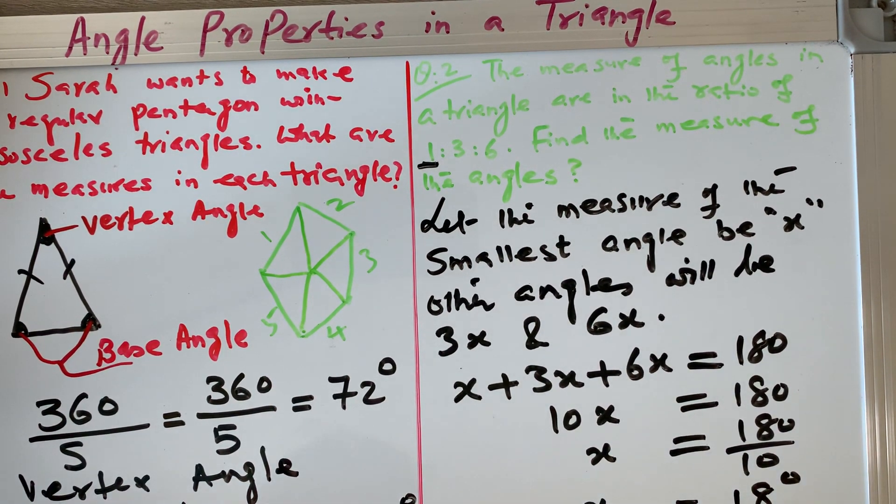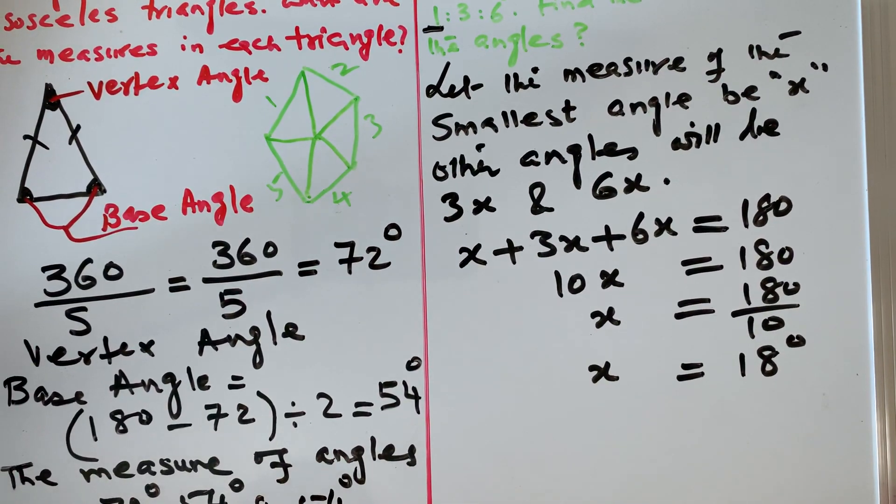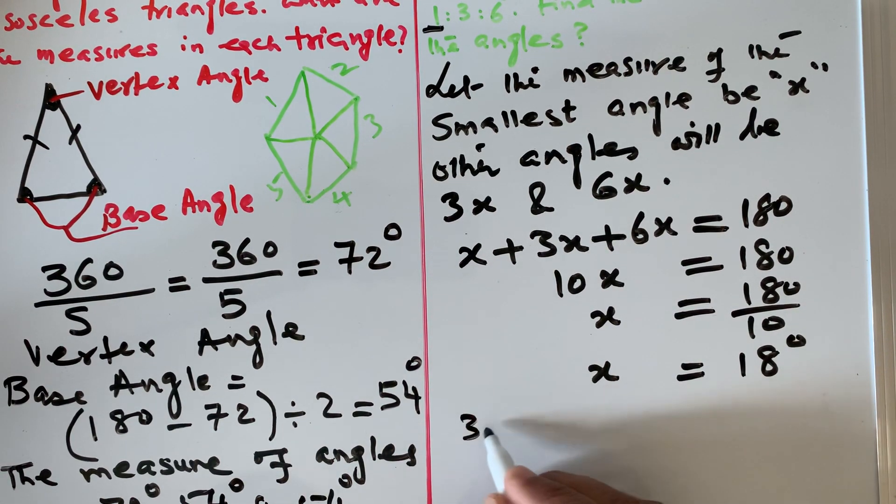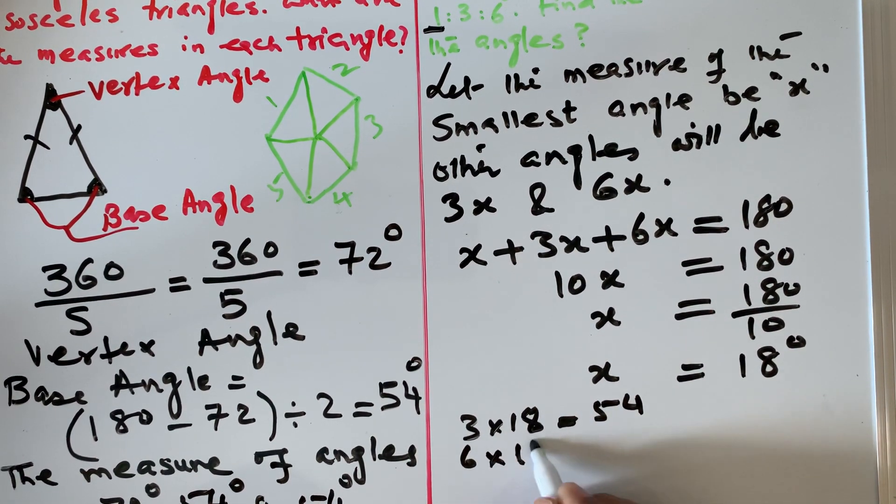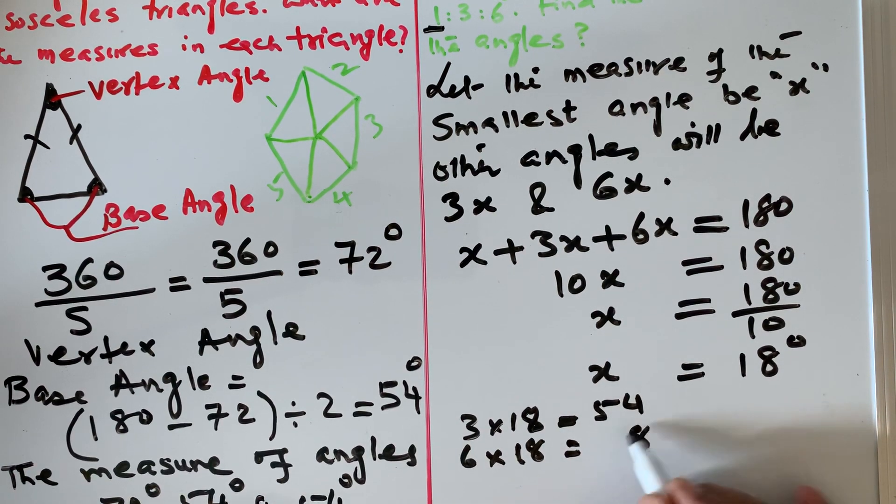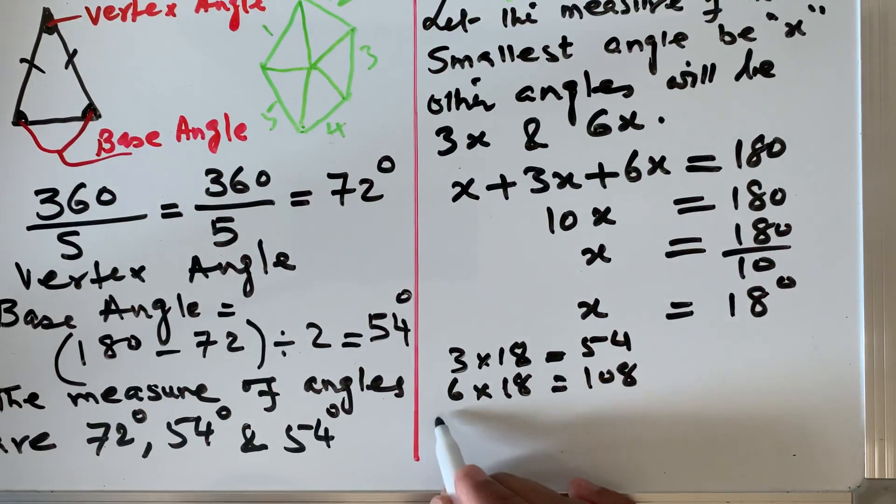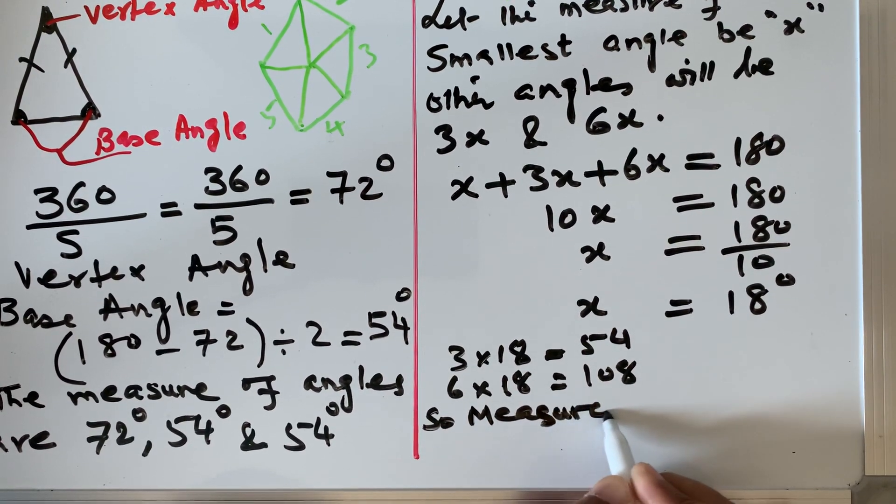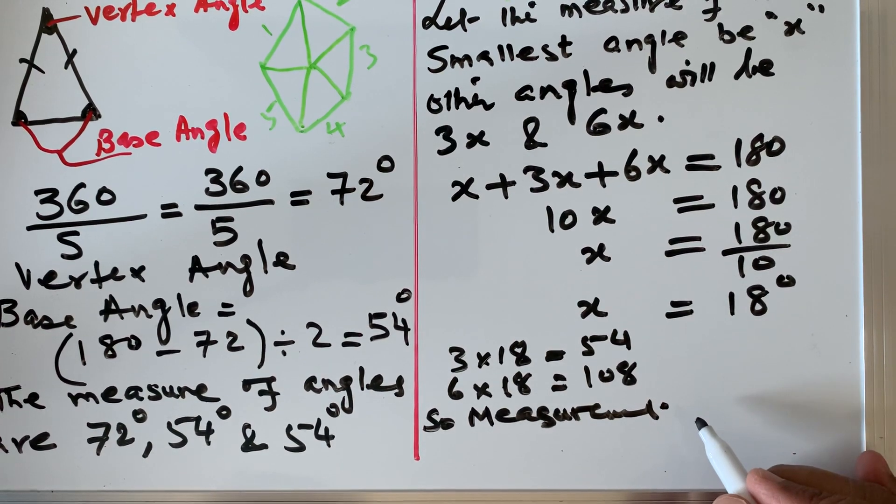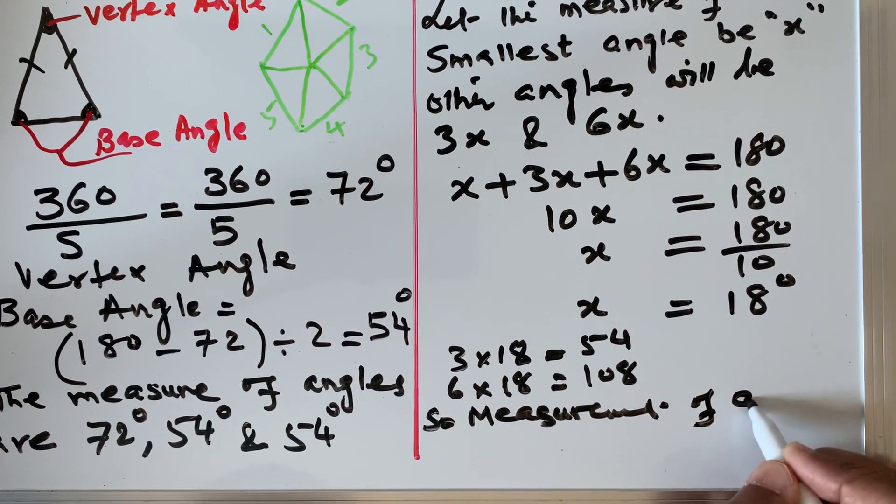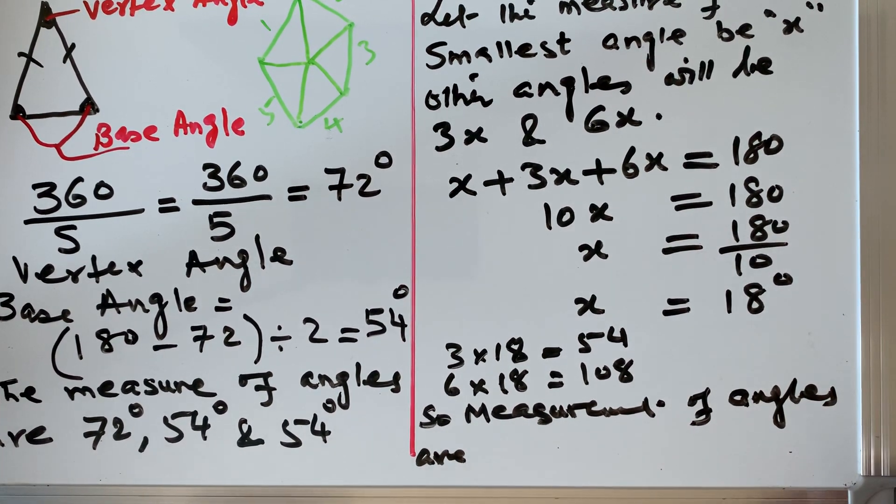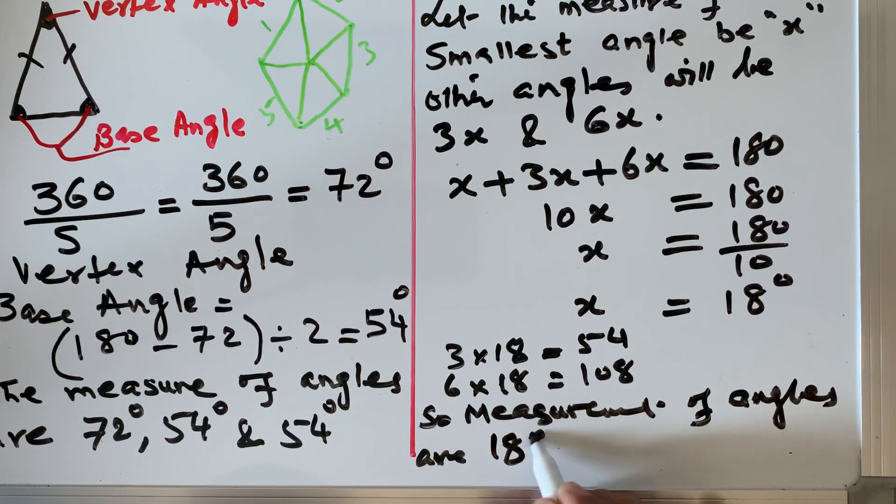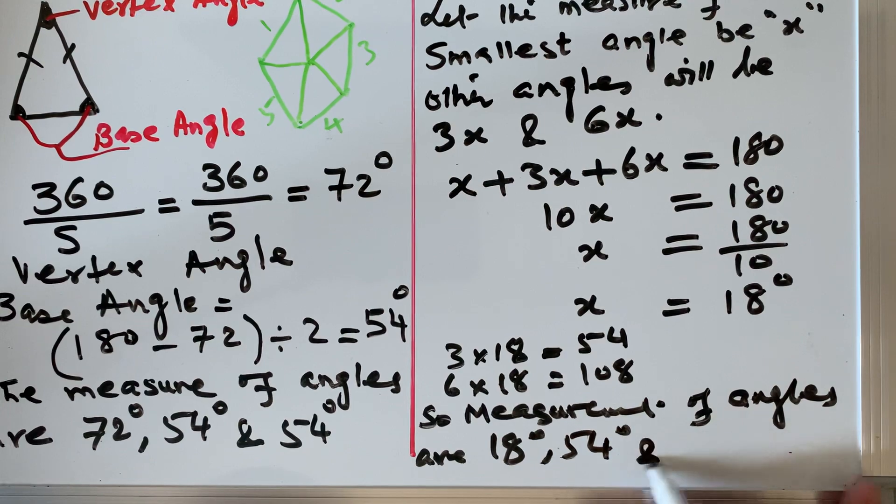So x is 18 degrees. Now we have the ratio. What is the next angle? 3x. So 3 times 18 is 54. And 6 times x is 6 times 18, which is 108. So my angles are, the measurement of angles are three angles: 18 degrees, 54 degrees, and 108 degrees.